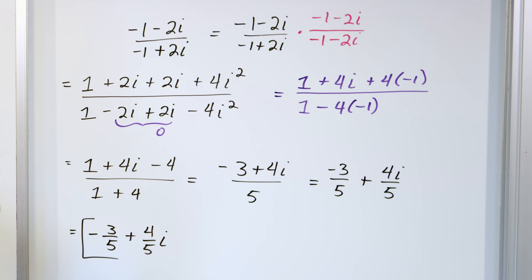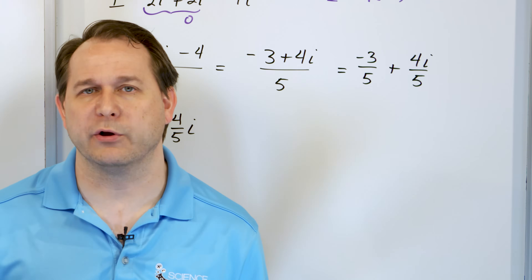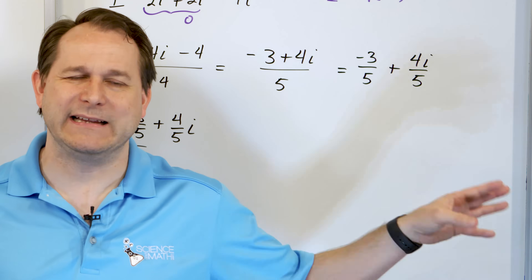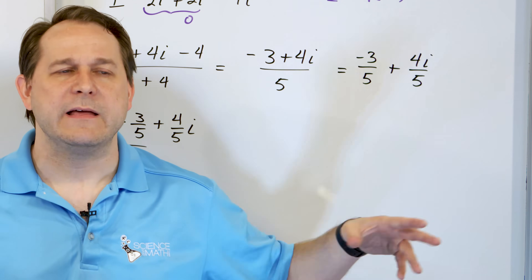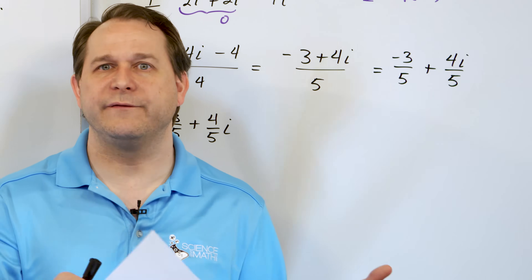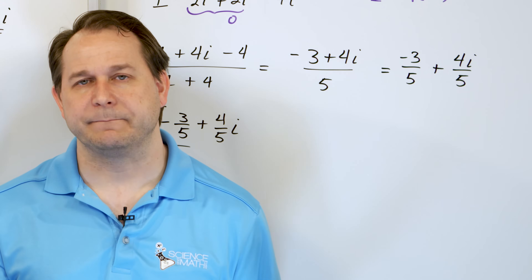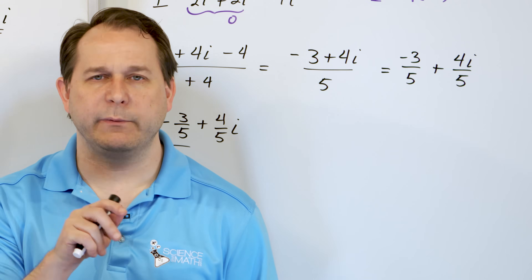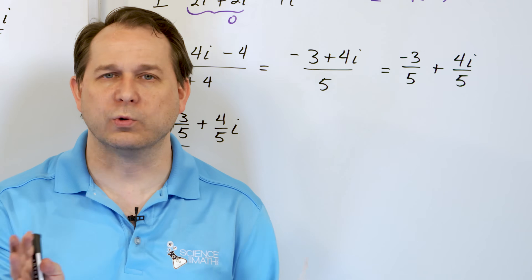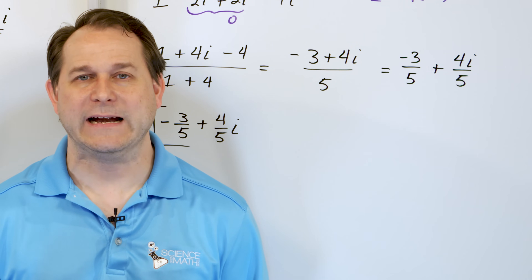So the final answer is negative three-fifths plus four-fifths i. I hope you've seen in this lesson that dividing complex numbers basically always becomes multiplication, at least at this point. Later we'll represent complex numbers in a slightly different way that makes multiplication and division even easier. But for now it all boils down to clearing the denominator through multiplication and then simplifying. Follow me on to the next section and we'll wrap up dividing complex numbers.